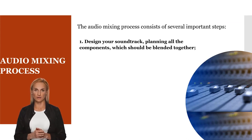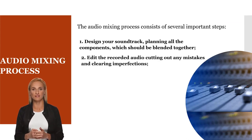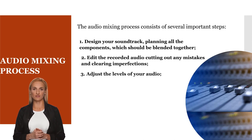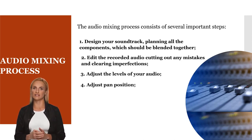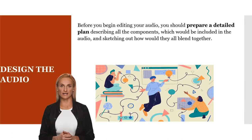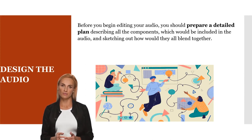The audio mixing process consists of several important steps. The first step is to design your soundtrack by planning all the components which should be blended together. The second step is to edit the recorded audio by cutting out any mistakes and clearing imperfections. The third step is to adjust the levels of your audio, and the last step is to adjust the pan position.